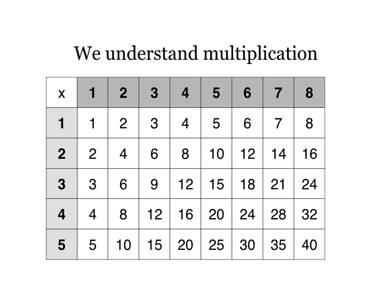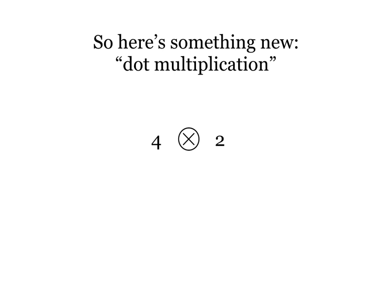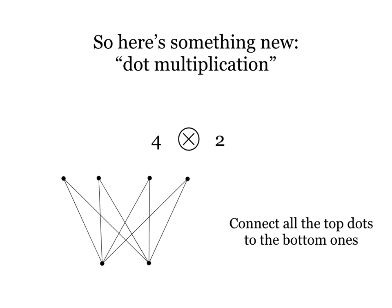So here is something new. I'm going to call it dot multiplication. Here's how it works. If I want to do four dot multiplied times two, I'm going to take the first number, the four, and I'm going to make four dots on the top of my picture. Then I'm going to make two dots on the bottom. I'm going to connect up all of the top dots to the bottom dots with straight line segments, like so.